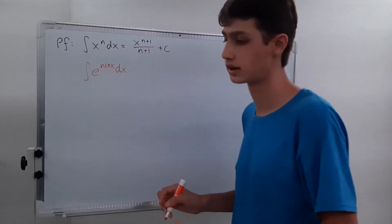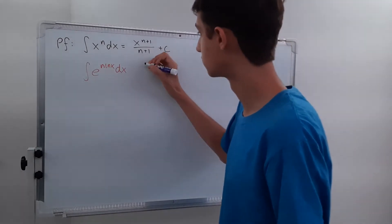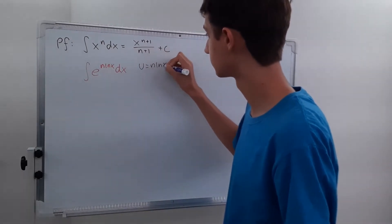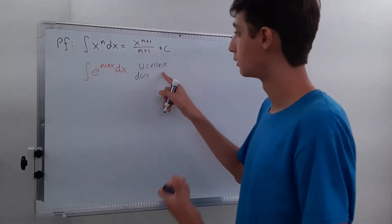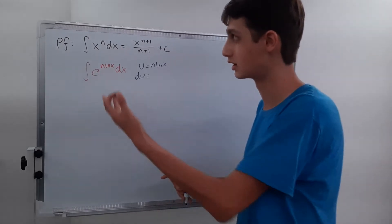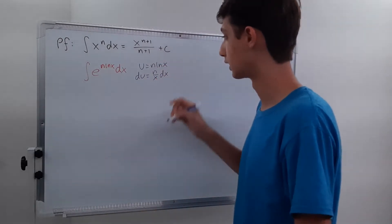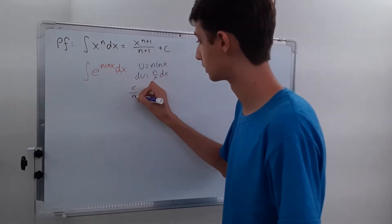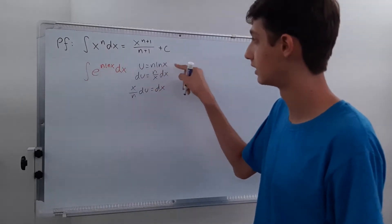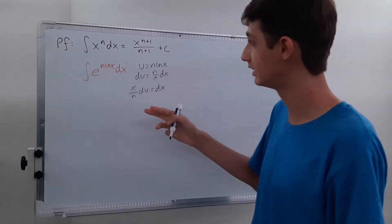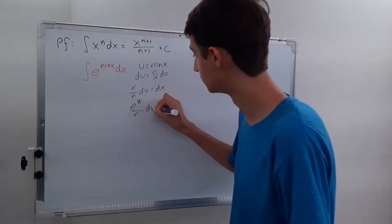There's no chain rule for integration, so we're going to use u-substitution. Let u equal n·ln x. Then du — taking the derivative, which we already computed when proving the derivative power rule — is n over x dx. Solving for dx: multiplying both sides gives x over n du equals dx. And since e to the u over n equals x, we get dx equals e to the u over n du.